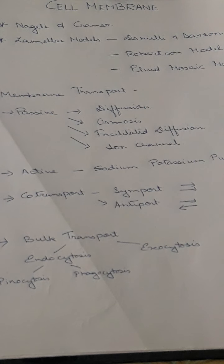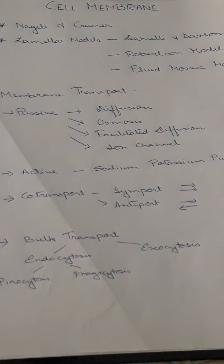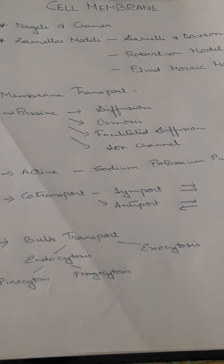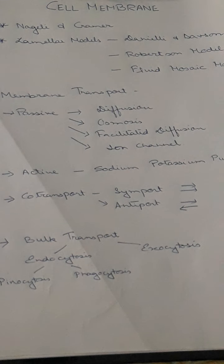Good morning everyone. Today let's discuss about the cell membrane. The cell membrane is also known as the biological membrane or biomembrane, and is a quasi-fluid, pliable, film-like structure that occurs both extracellularly around the protoplast of the cell and intracellularly inside the cytoplasm of most cells. It was first termed by Nageli and Kramer. Later it was found that it also occurs inside the cell, and hence it is known as the plasma membrane or plasmalemma, a term coined by Plo.